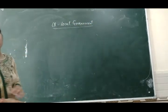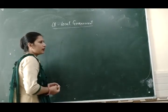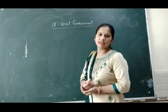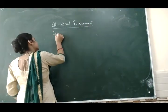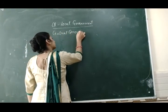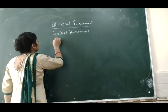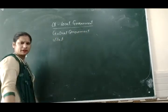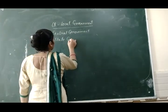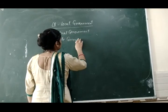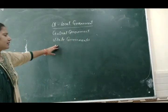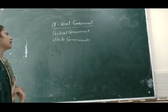First of all I want to tell you about the government's levels. The powers are divided into many levels in India. The first one is the central government, the second one is the state government. In the central government, parliament makes the rules and regulations for the complete country. The state government comes under the central government and makes the rules and regulations for the state only.